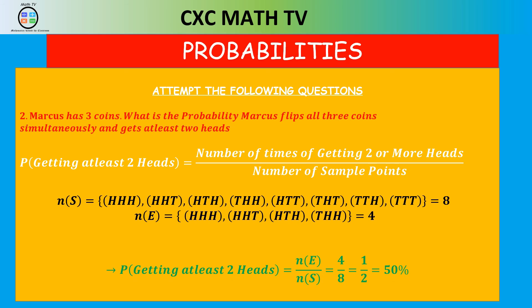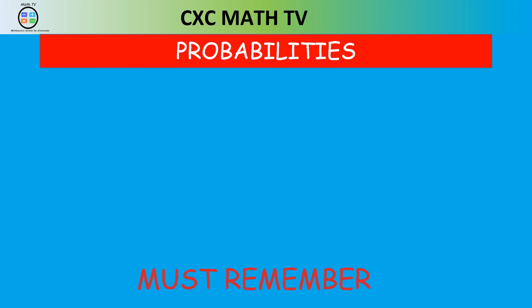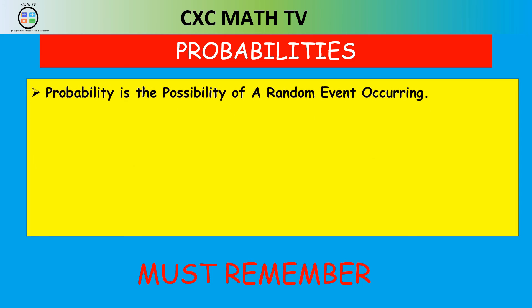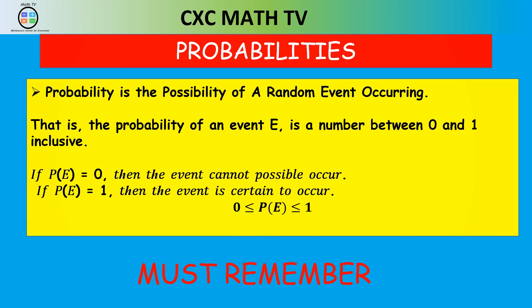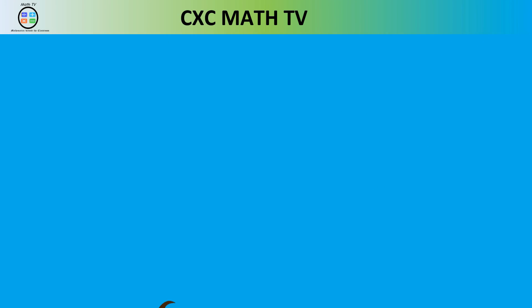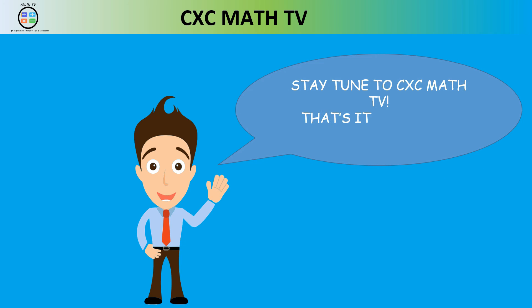That concludes the introduction to probability. Remember: probability is the possibility of a random event occurring, and the probability of an event is a number between zero and one. If the probability is zero, the event cannot occur; if it is one, the event is definitely occurring. Stay tuned for more as we continue with probability and look at more aspects of this topic. Take care and have a blessed day!